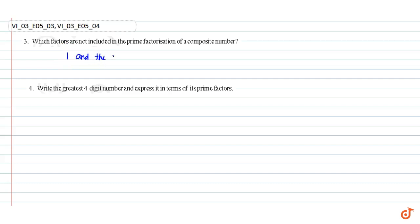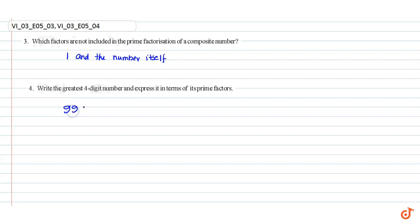Question number four: write the greatest four-digit number and express it in terms of its prime factors. We know that the greatest four-digit number is 9999. This is equal to 3 × 3 × 11 × 101.